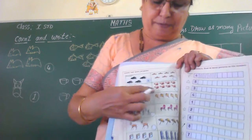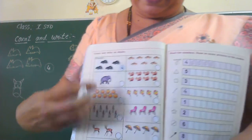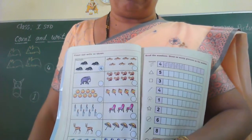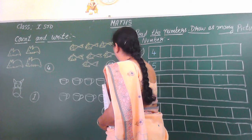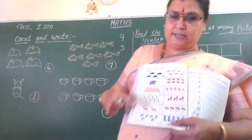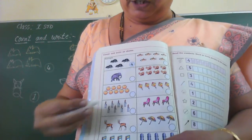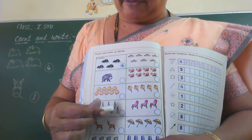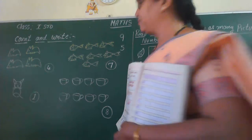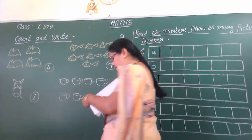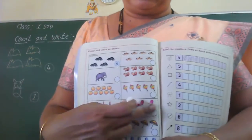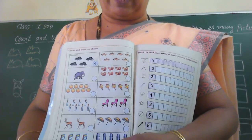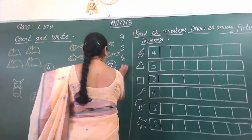Now next, how many kites are there children? Count. One, two, three, four, five. In this circle you have to write which number? You have to write five. Next, how many kites are there? Count: one, two, three, four, five, six, seven, eight. So in this circle which number you have to write? We have to write eight. Next, how many kites are there? One, two, three. So in this circle how many kites? There are three kites. So write three.